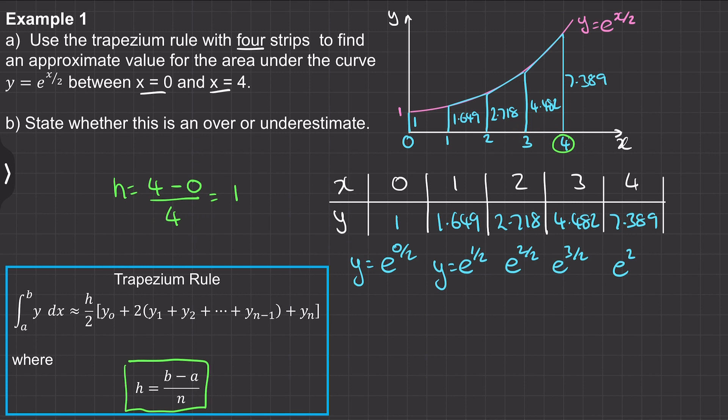So putting this information into our formula, the integral between 0 to 4 of e to the x over 2 with respect to x will be approximately h over 2 times y0 which is 1 plus two lots of y1 plus y2 plus y3 and then plus yn. So when we work this out on our calculator we get 13 to 3 significant figures. So the area underneath this curve is approximately 13 units squared.